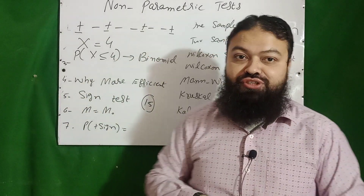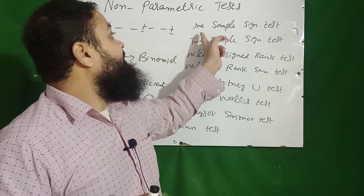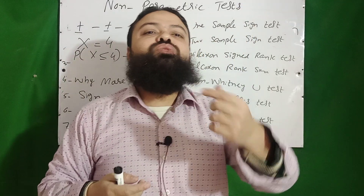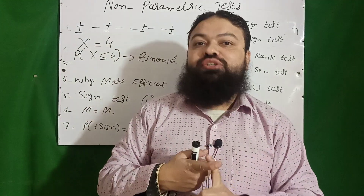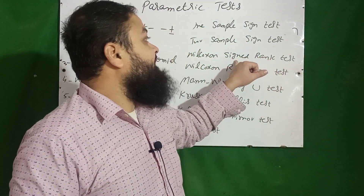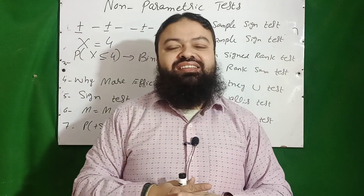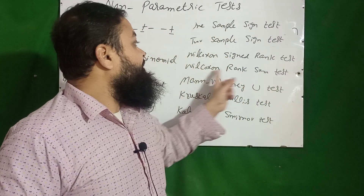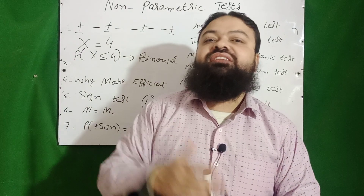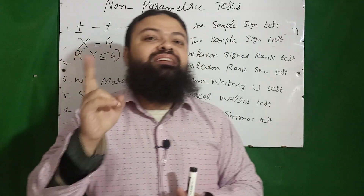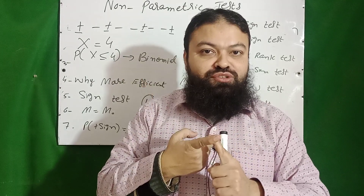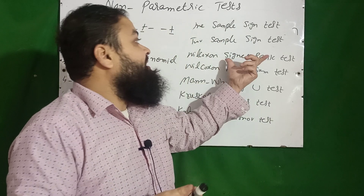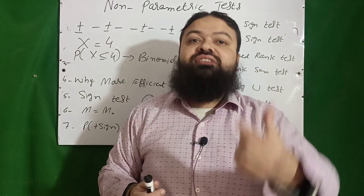The sign test is for one sample. For two samples, we use the Wilcoxon signed rank test, which is an improved version of the sign test and also considers the magnitudes of differences. The Wilcoxon rank sum test is a non-parametric test for two independent samples — the sample sizes can be equal or different. The Wilcoxon signed rank test is performed for paired differences.